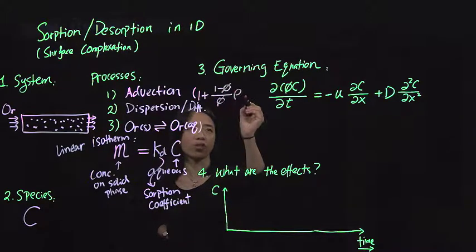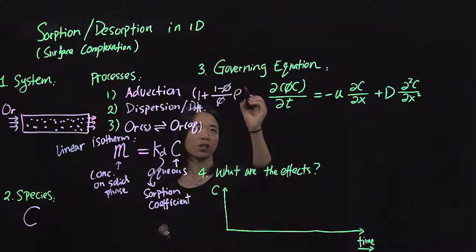And then you have ρ, which is the density of the solid phase. You have kd.